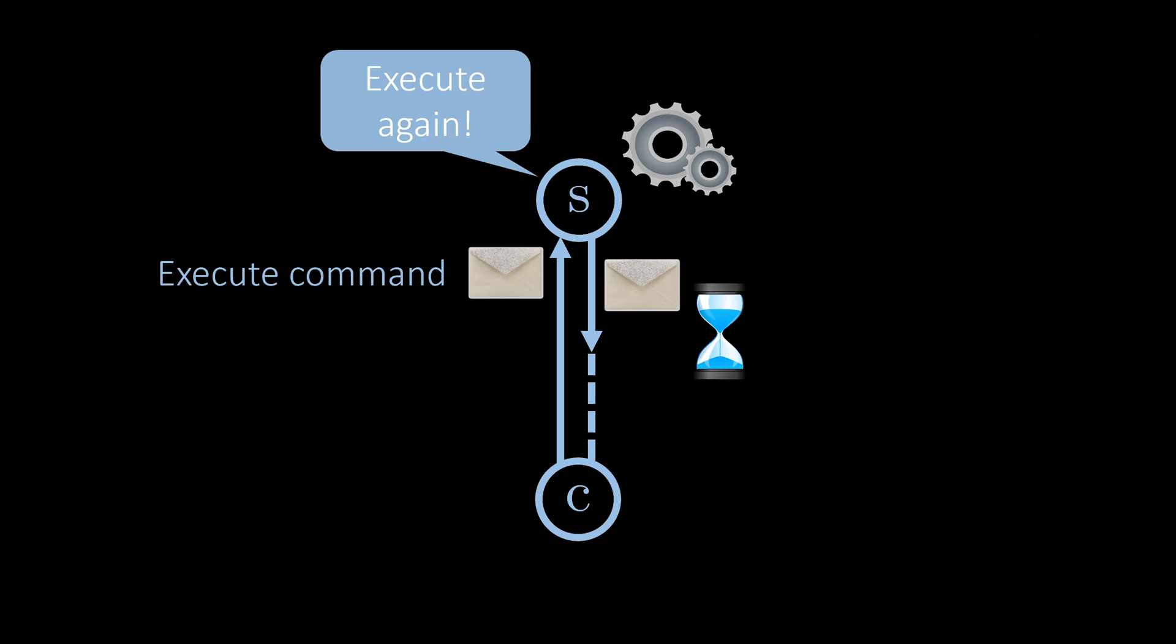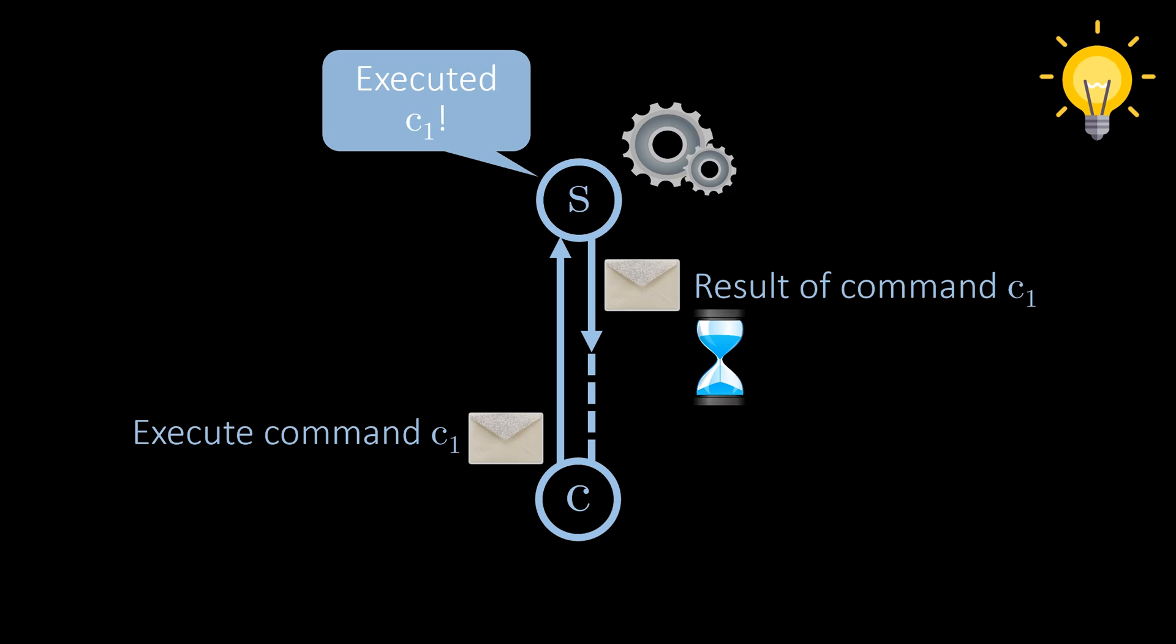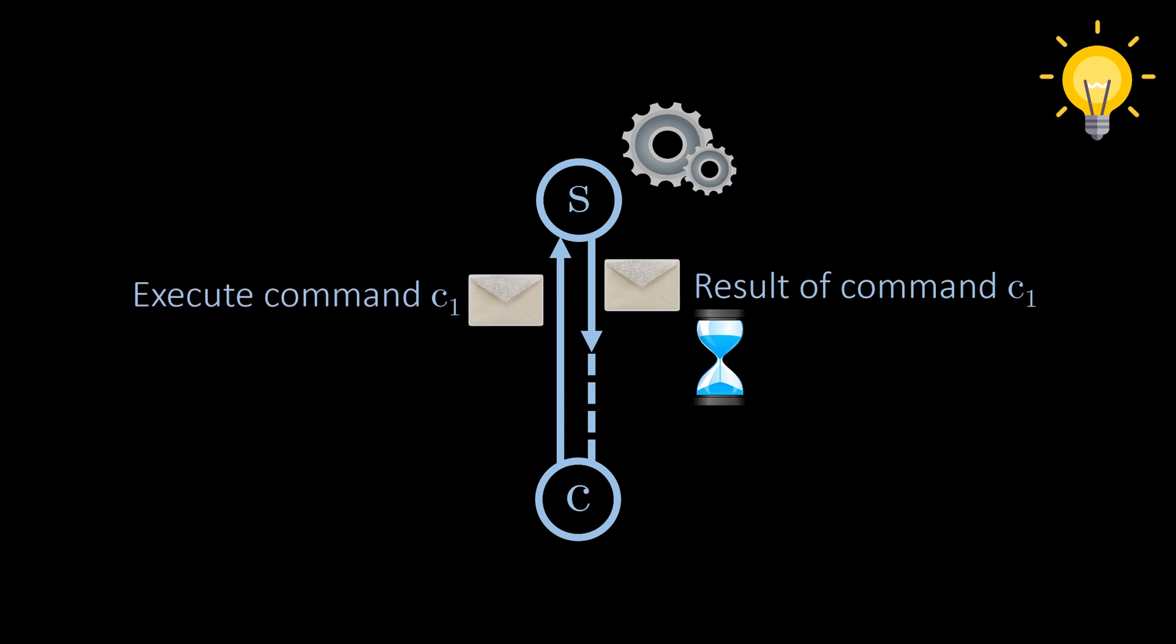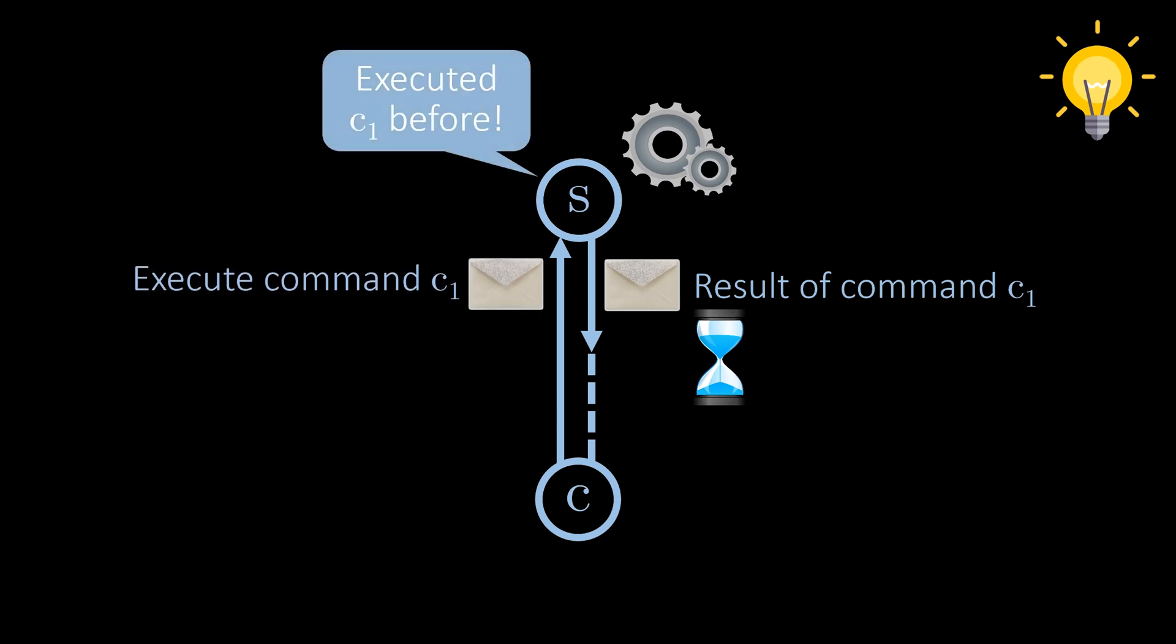Ready? A straightforward solution is to store information about executed commands at the server. If it receives the same command again, it will ignore the request or reply again that it has already executed the command. One way to implement this is to associate each command with a number, the next expected number at the server with each request. If a request to execute a command arrives with a lower number, the command is not executed.